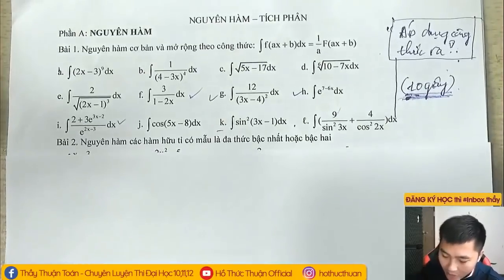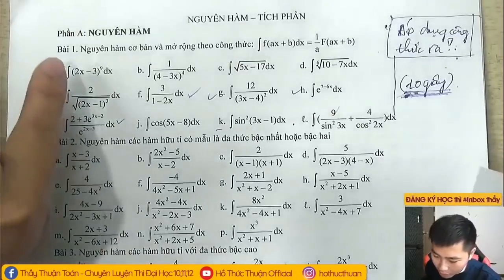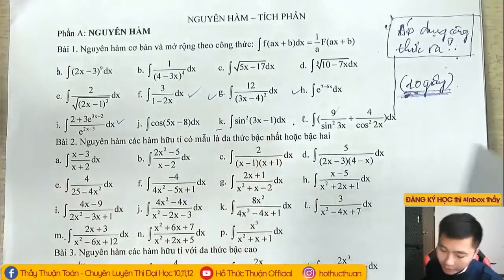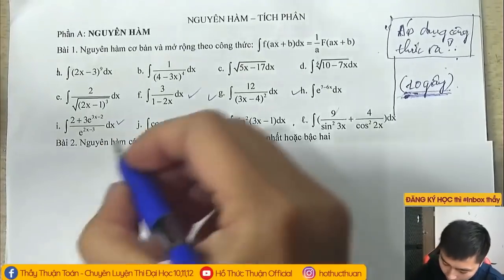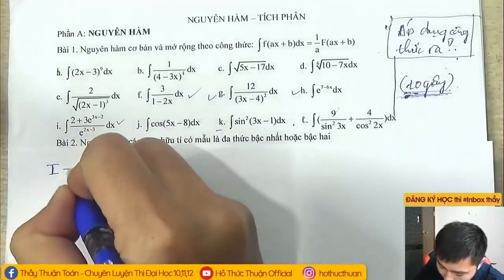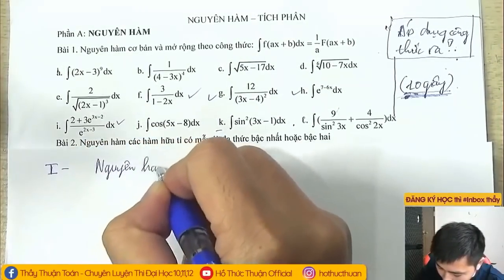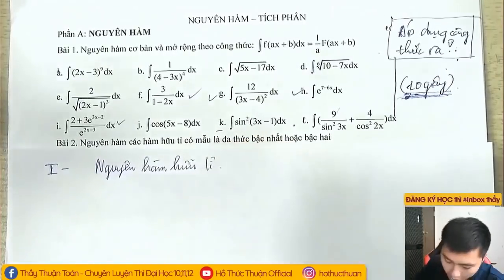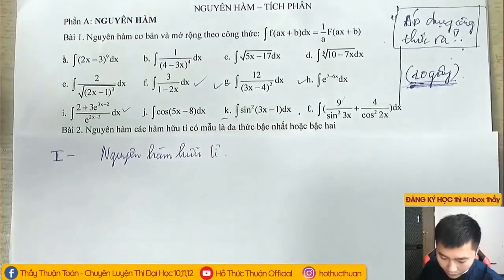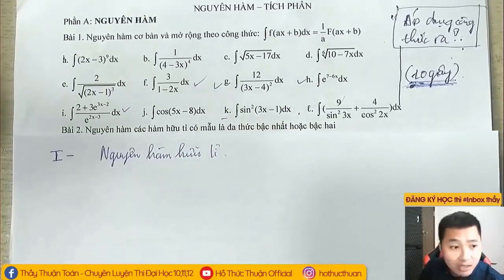Hôm nay chúng ta sẽ học về hai điều rất quan trọng, đó là Nguyên Hàm Hữu Tỷ. Nguyên Hàm Hữu Tỷ thực ra các bạn cũng biết là nó giống như dạng phân số vậy, đúng không? Dạng phân số thì hàm số của chúng ta có dạng F(x)/G(x) dx.